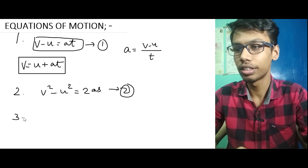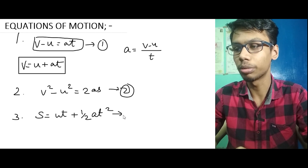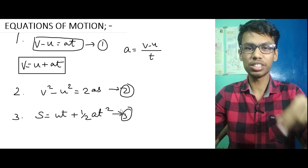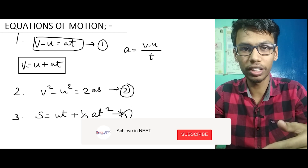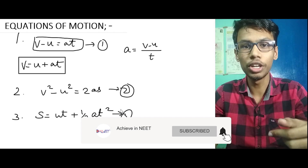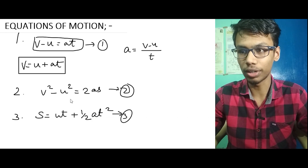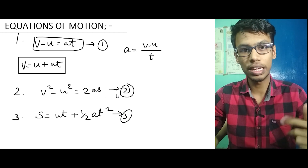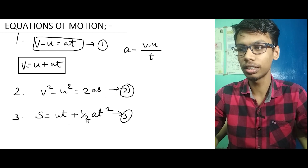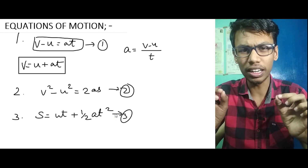The third equation is s equal to ut plus half a t squared. Let's define the variables: V is the final velocity, U is the initial velocity, A is the acceleration, and S is the displacement. These are the three basic equations of motion.